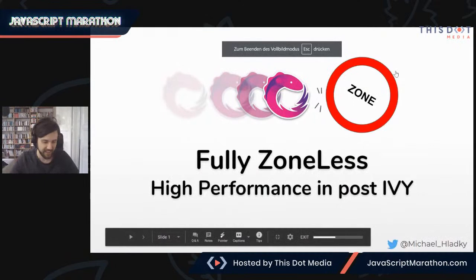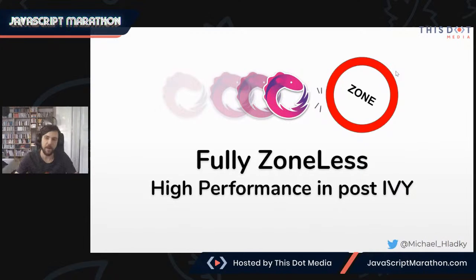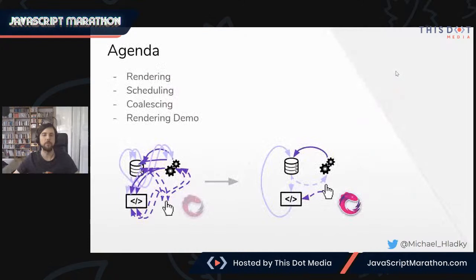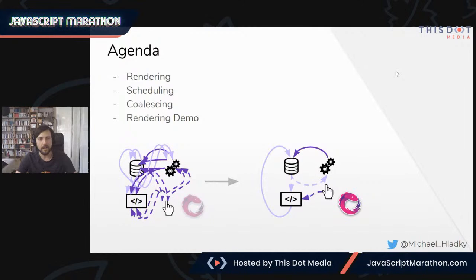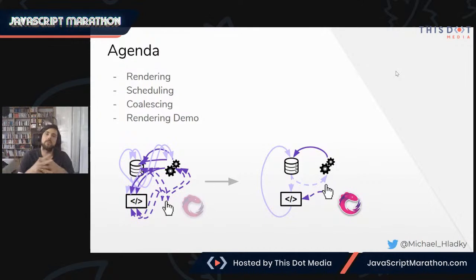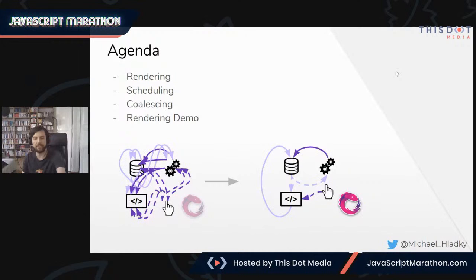Let me start and share my screen. The async pipe is boring. I want to start with the slide deck here — fully zoneless, high performance Angular applications in post-Ivy. I will introduce you to rendering in general, and to demonstrate everything, I have to explain two core concepts: scheduling and coalescing. With those two concepts implemented in code, I will present demos showing how you can get cutting-edge performance even with zone included.